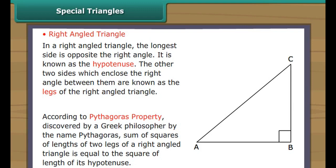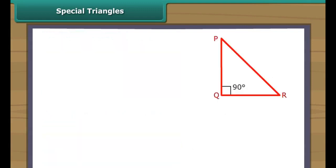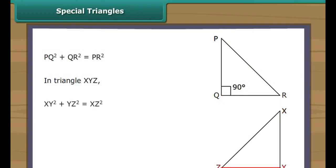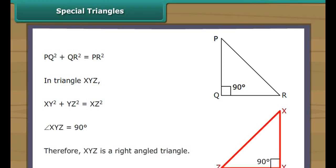According to the Pythagoras property, in right-angled triangle PQR, PQ squared plus QR squared is equal to PR squared. In triangle XYZ, it is given that XY squared plus YZ squared equals XZ squared. Let us measure angle XYZ, which is opposite to hypotenuse XZ. Angle XYZ equals 90 degrees. Therefore XYZ is a right-angled triangle.